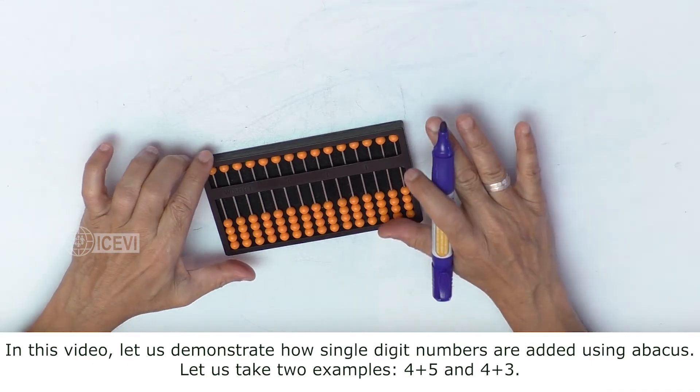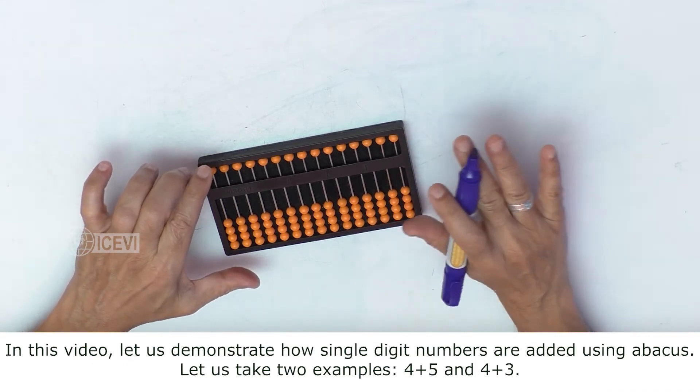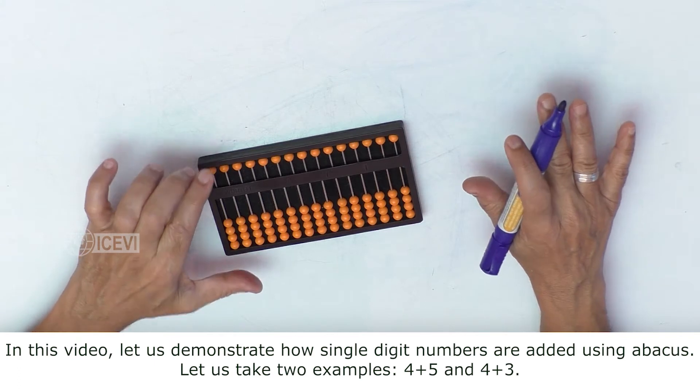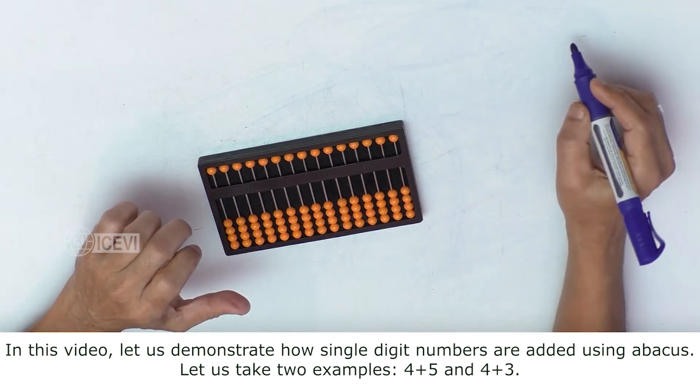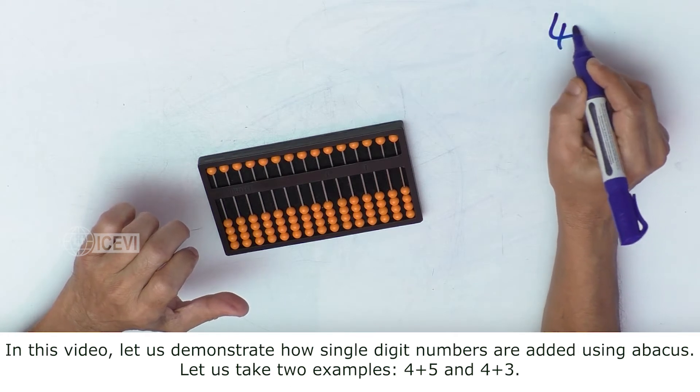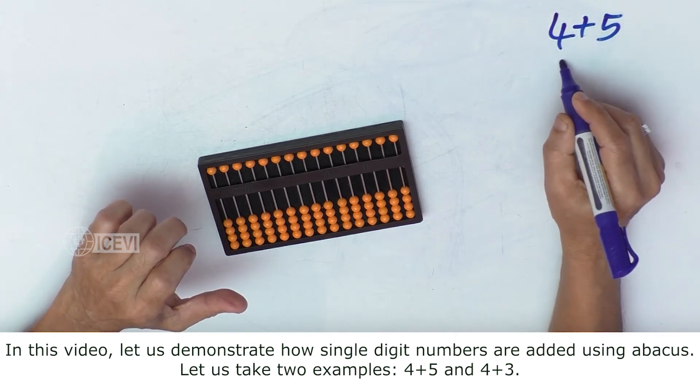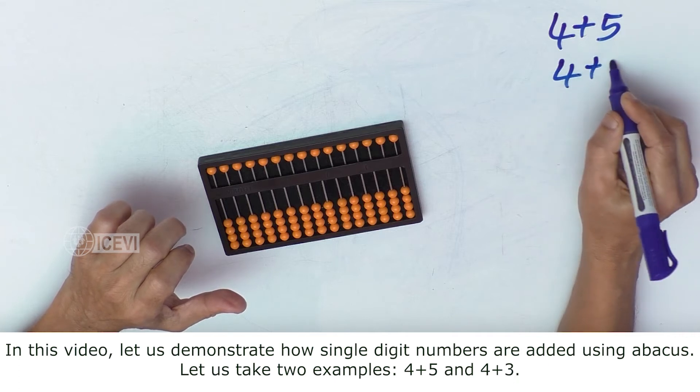In this video, let us demonstrate how single digit numbers are added using abacus. Let us take two examples: 4 plus 5 and 4 plus 3.